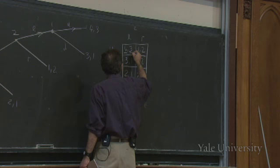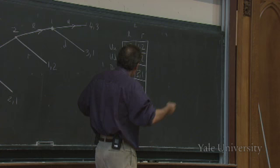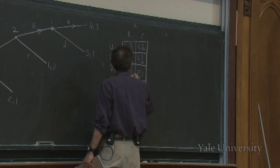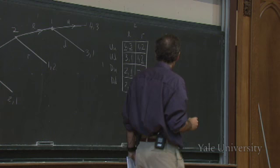Conversely, if player one is choosing up-up, player two is happy and chooses left. If player one was going to choose up-down — that's player one screwing up at the second stage — then player two wants to get out and choose right. If player one is choosing down-up or down-down, player two is indifferent since they don't get to move at all.